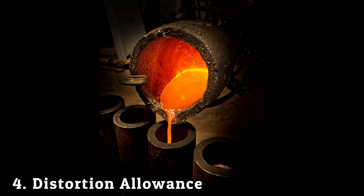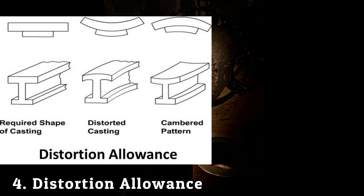When casting very thin surfaces like V-shape, U-shape, etc., they will distort or get damaged during pattern removal or during casting. To avoid this problem, a camber is provided on the pattern to compensate for distortion during pattern removal. This change in casting dimension is known as distortion allowance.